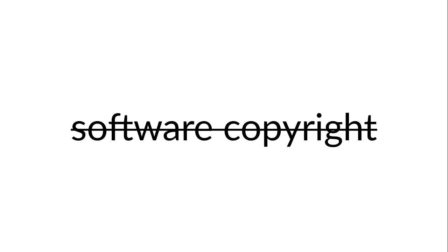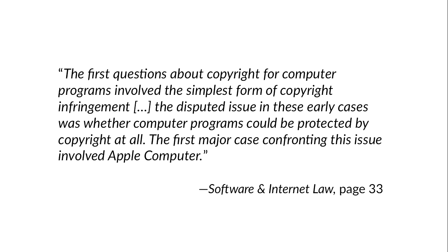When Stallman first modified that software, there was no such thing as software copyright. In the '70s, software copyright didn't exist — all software could be freely modified and redistributed. In the United States, software became copyrightable in the 1980s. Various countries followed; the US was first. In Australia, it was 1984 that it was added to the Australian Copyright Act. And even after it was added to the Copyright Act in various countries, there were still a series of legal cases debating whether software could be subjected to copyright law.